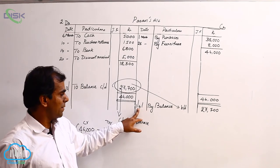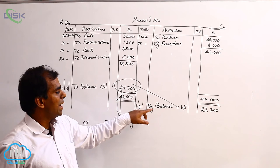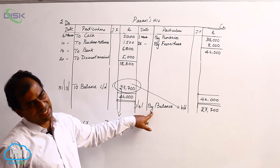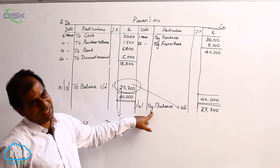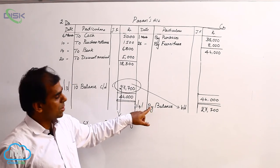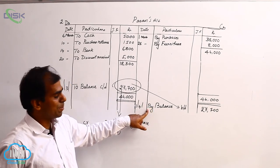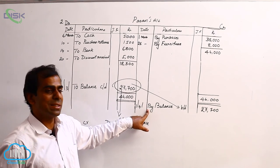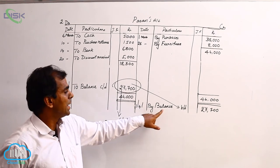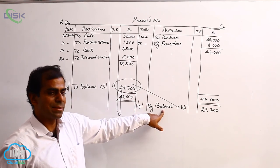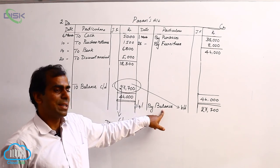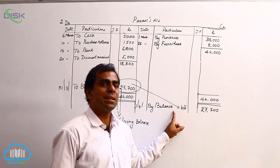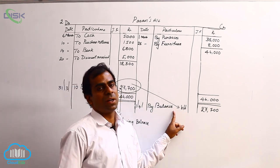We are writing the balance on the credit side, so in the particulars column on the credit side the constant is always 'By'. Since this is an opening balance, we write 'Balance b/d' — that is, balance brought down. The closing balance of the last month becomes the opening balance for the next month, written on the first day of the following month.